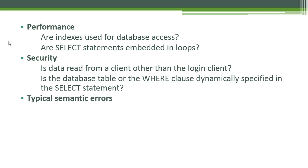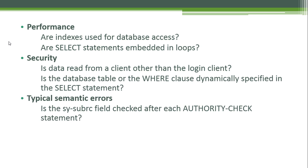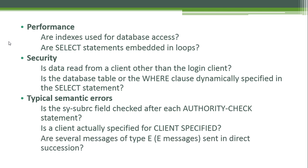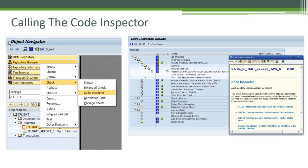For typical semantic errors, questions include: is the SY-SUBRC field checked after each authority check statement? Is a client actually specified? Are several messages of type E sent in direct succession? These questions are very important when you analyze your program. To call the Code Inspector, right-click on your program name, then select Check, and then select Code Inspector.